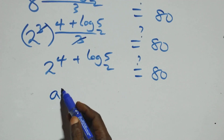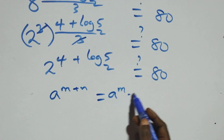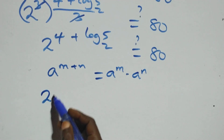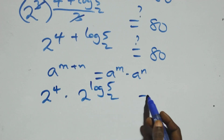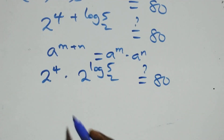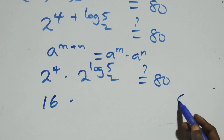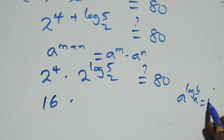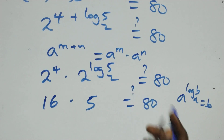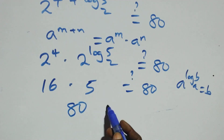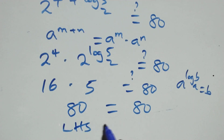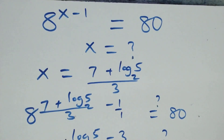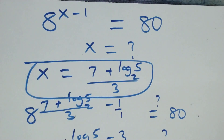Using the law of indices: a raised to power (n plus m) equals a raised to power n times a raised to power m. So we have 2 raised to power 4 times 2 raised to power log₂5 equals 80. Now 2 raised to power 4 is 16, and 2 raised to power log₂5 equals 5, by the rule a raised to power log_a(b) equals b. So 16 times 5 equals 80, which equals 80. Left-hand side equals right-hand side. Therefore x equals (7 plus log₂5) / 3 satisfies the given problem. Thank you for watching — don't forget to subscribe for more videos, turn on the notification bell, share this video, give a thumbs up, and put your comment. See you next lesson, bye for now.